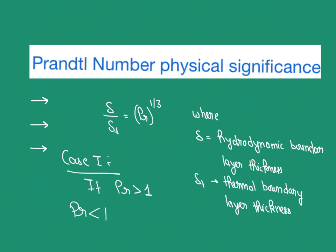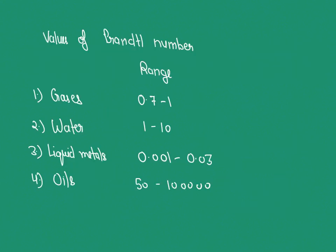One more significance: the Prandtl number can be used to determine the thermal conductivity of gases at high temperatures where experimental measurement is difficult. The value ranges are: for gases, 0.7 to 1; for water, approximately 1 to 10 (some books say 1 to 14); for liquid metals, 0.001 to 0.03; and for oils, 52 to 100,000 (values vary with temperature).